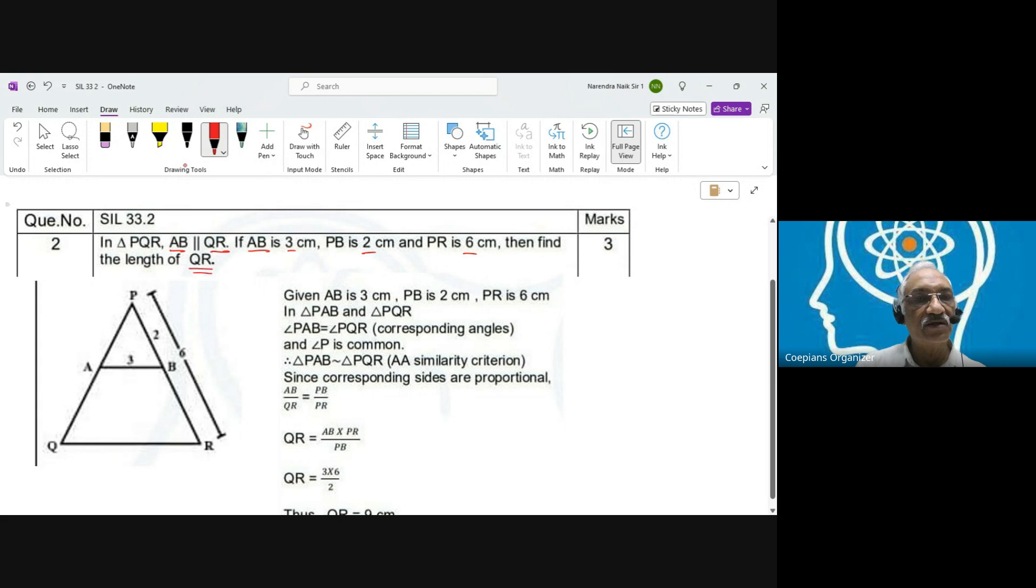They have given a couple of things. One is that AB is parallel to QR. One length is given for a side which is PR. We'll draw a diagram and see. Then find QR. So we've drawn this particular diagram.